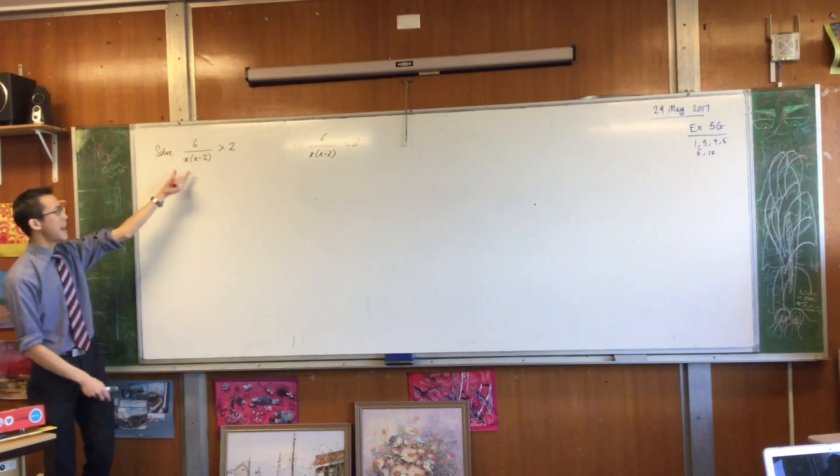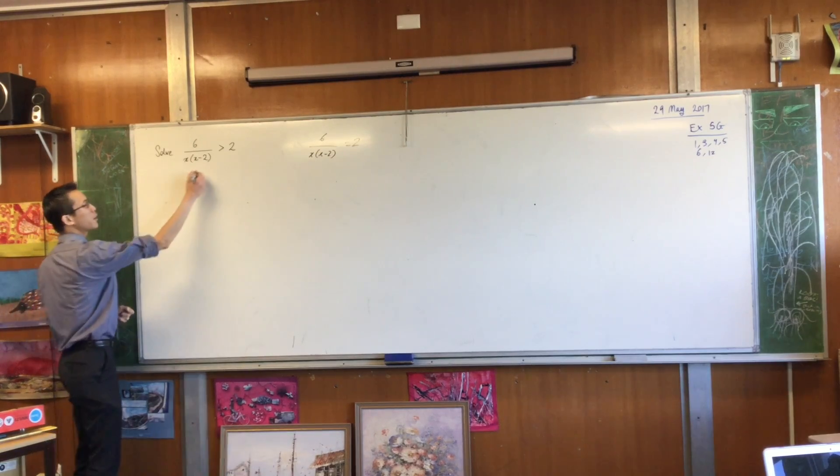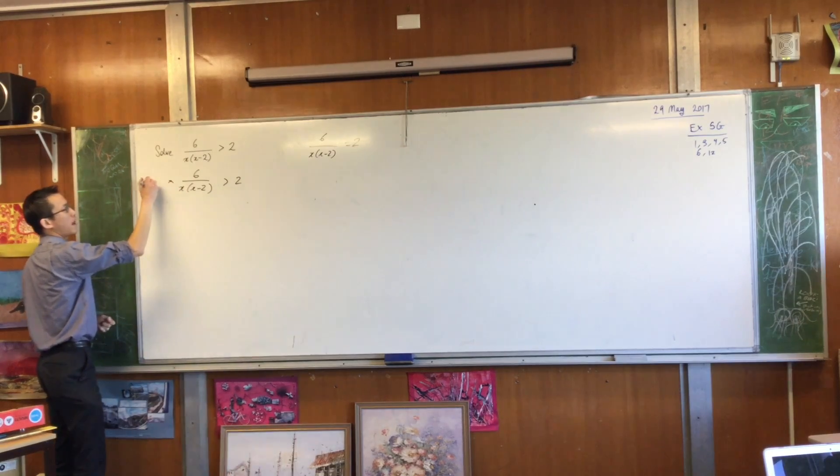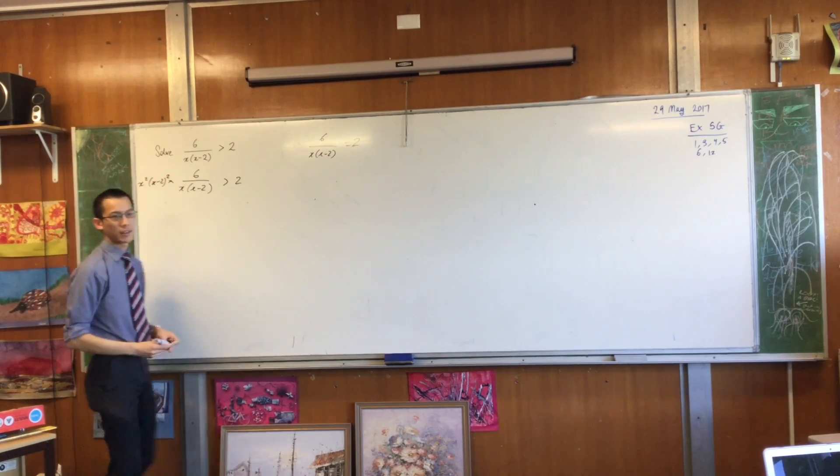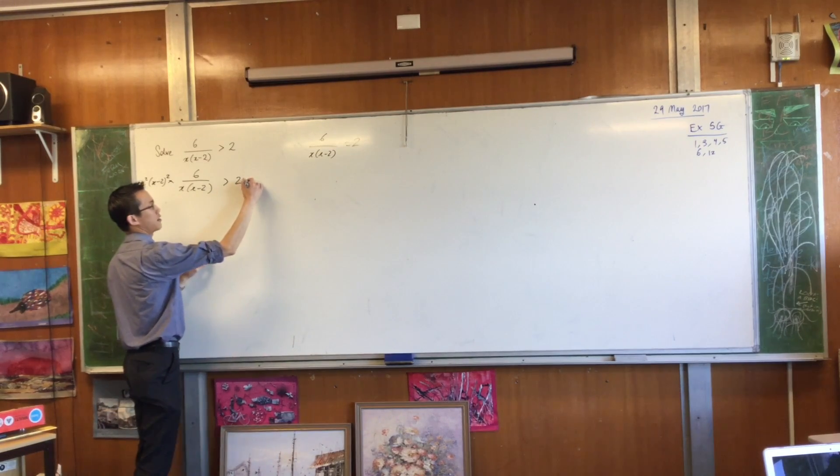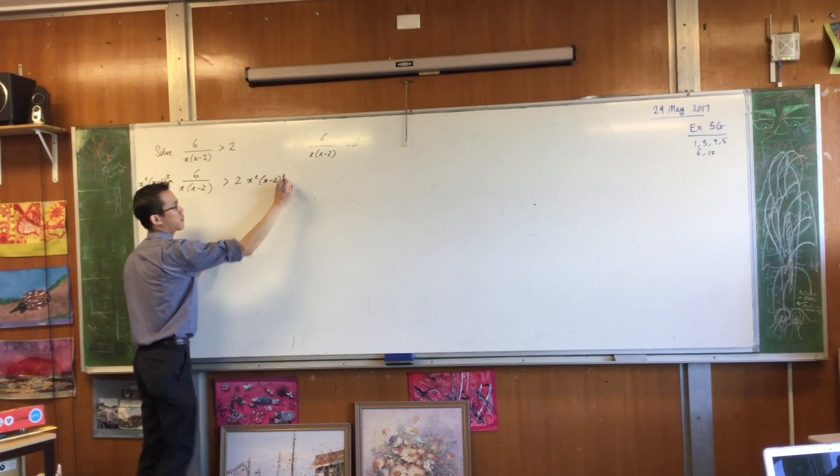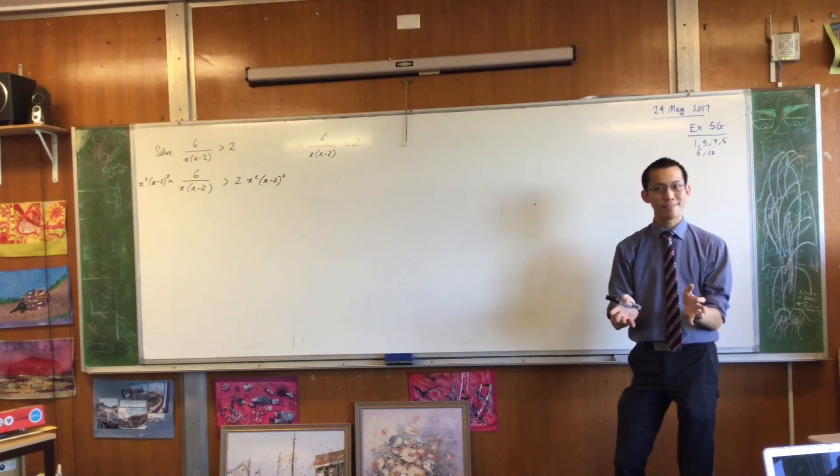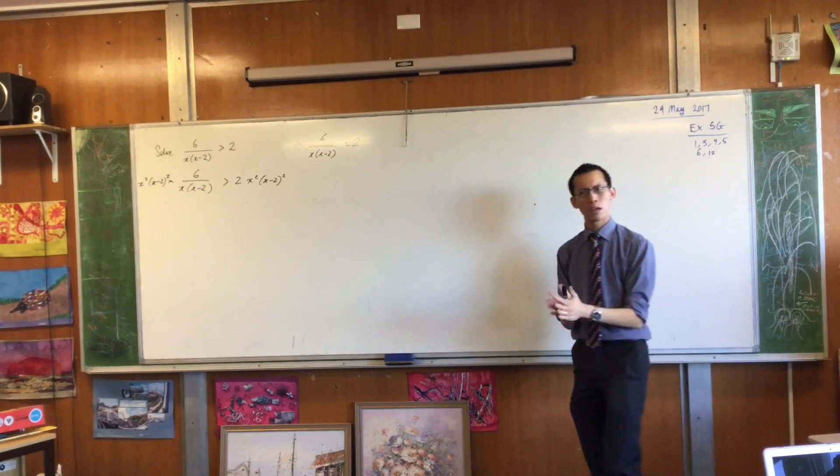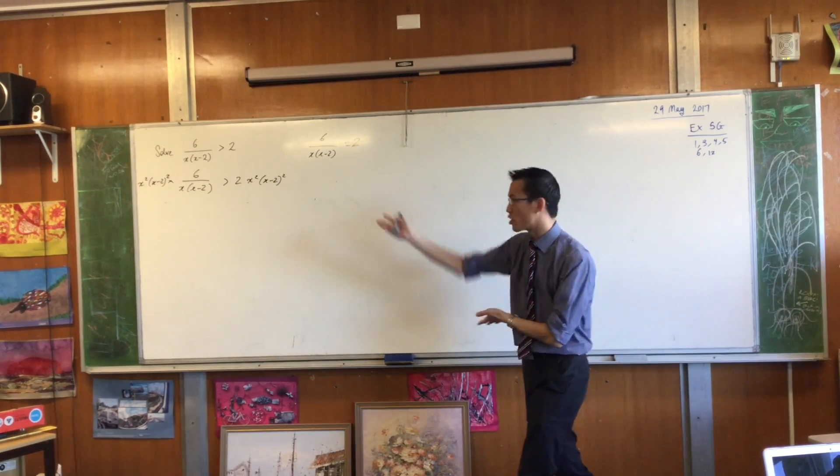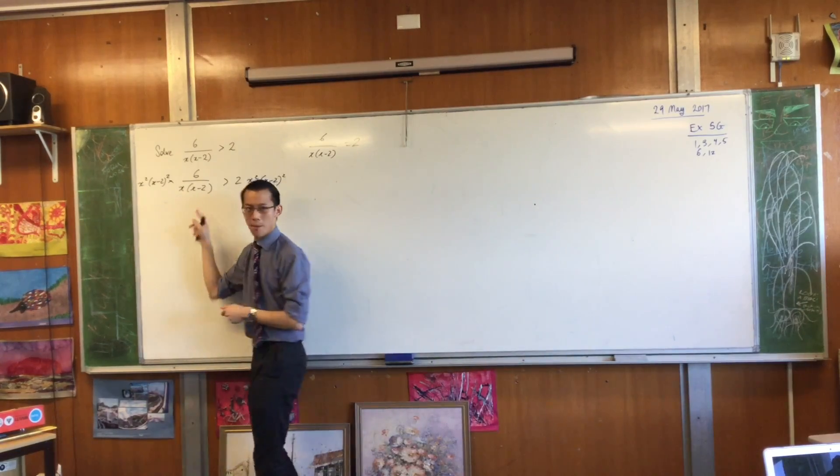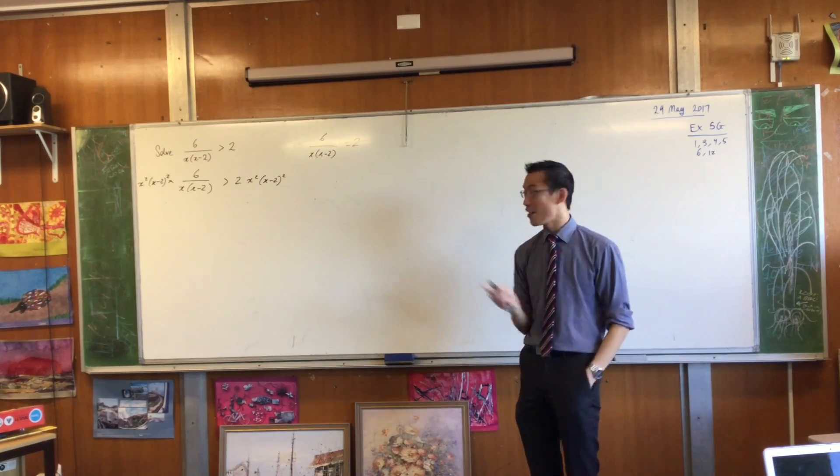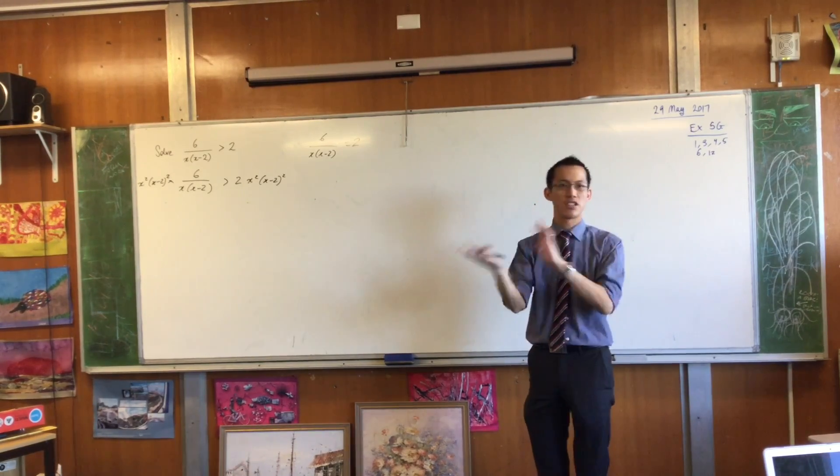Instead of multiplying by x, x minus 2, I'm going to multiply both sides by x squared times x minus 2 squared. Now I've done it to the left, I better do it to the right before I explain what I'm doing. x squared x minus 2 squared. The reason why this is more useful is because having squared it, I've now gotten rid of my problem. Squaring it rather than multiplying by just the denominator means I know the sign, right? I now know this thing is either 0 or positive, which doesn't change the direction of the inequality.